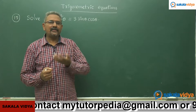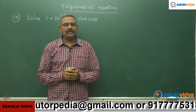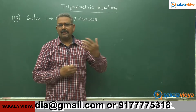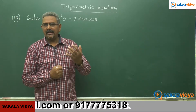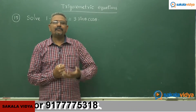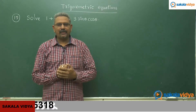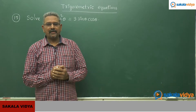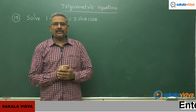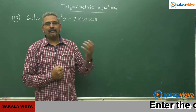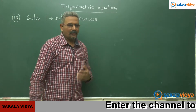By solving the tan theta value, we can find out the principal solution. Similarly, using the formula tan theta equals to tan alpha, where alpha is the principal value, the general solution theta is given by n pi plus alpha, where n belongs to Z. In this way, this problem can be solved.